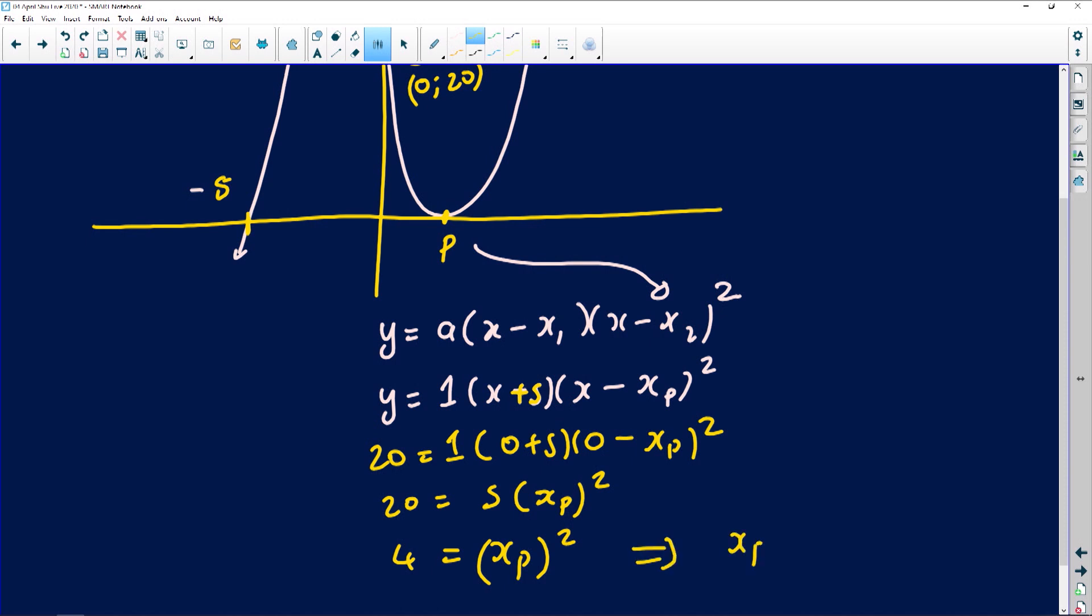You're going to get 4 is x of p squared. If you take out the square root on both sides, your x value of p is going to come out as exactly the square root of 4, which is plus minus 2. But based on the position of p, we can then conclude that the x value of p is actually equal to not negative, but positive 2. So this number here is a plus 2.